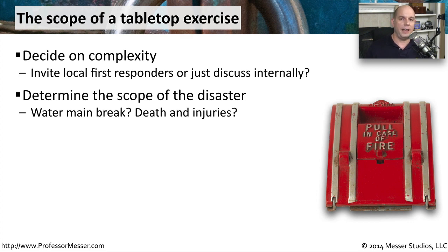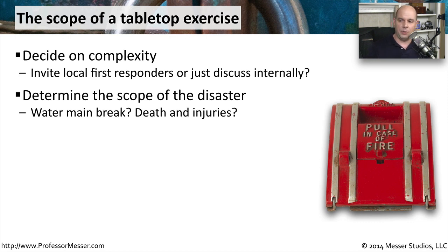How do we adjust to have those particular problems occur? We need to determine what the scope of the disaster might be — do we want a simple water main break, or should this be a hurricane or some type of natural disaster where there are going to be injuries involved? This is going to make a big determination of how far we go through the steps of our disaster recovery process.